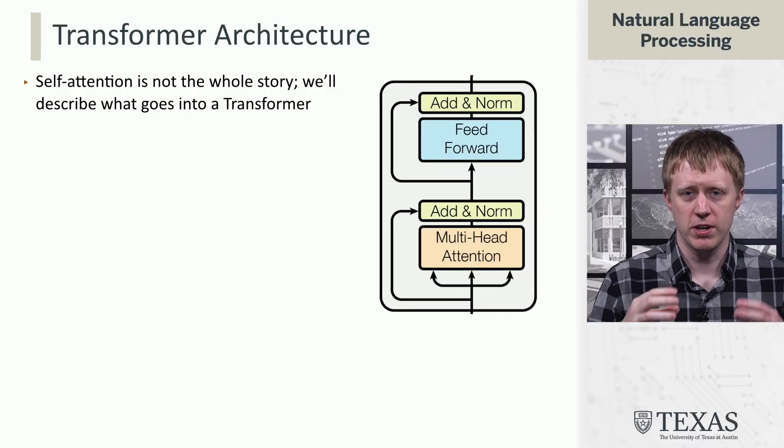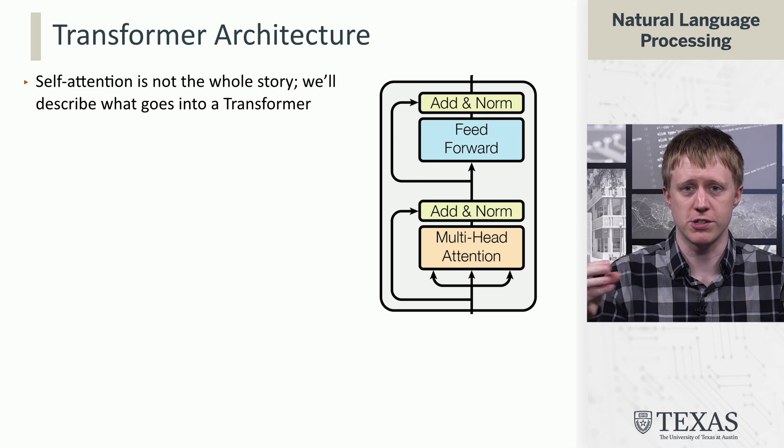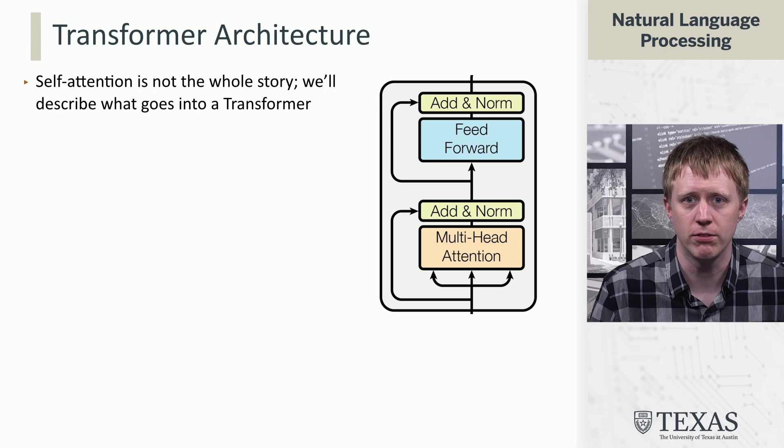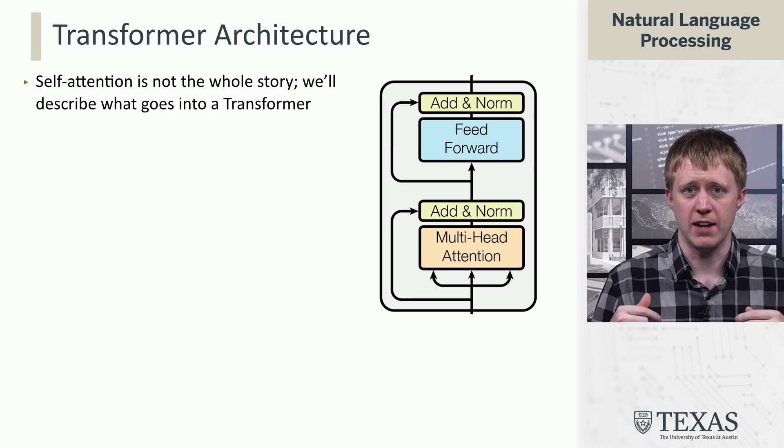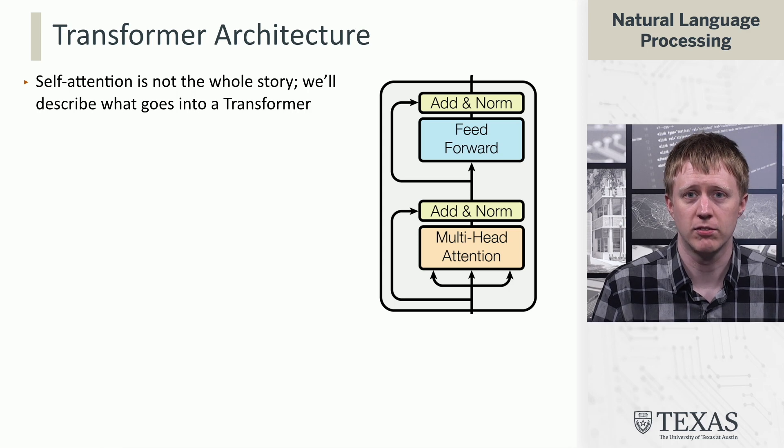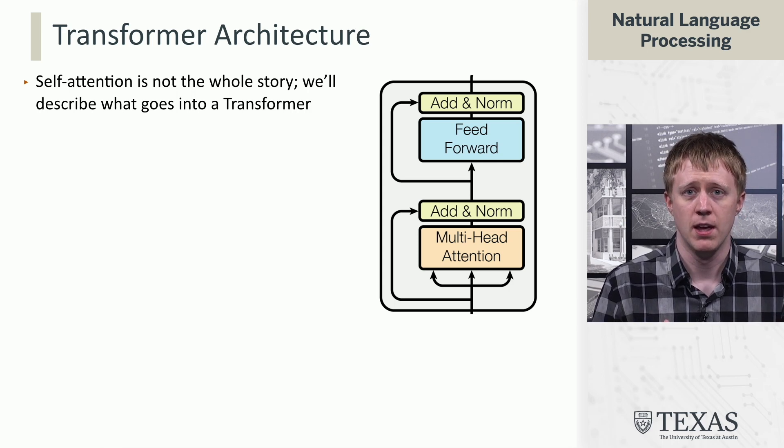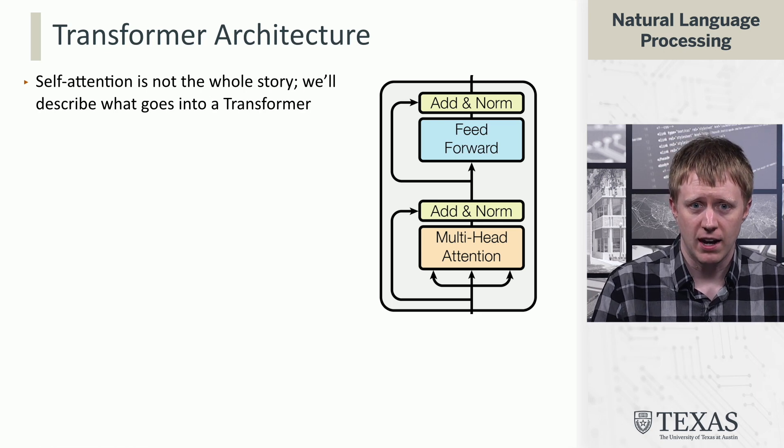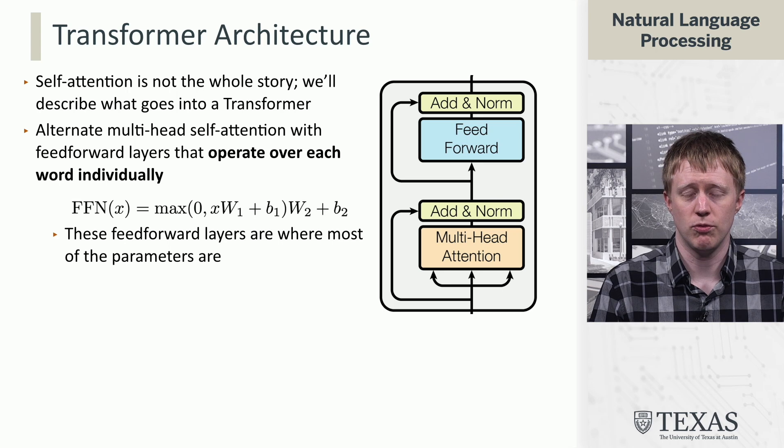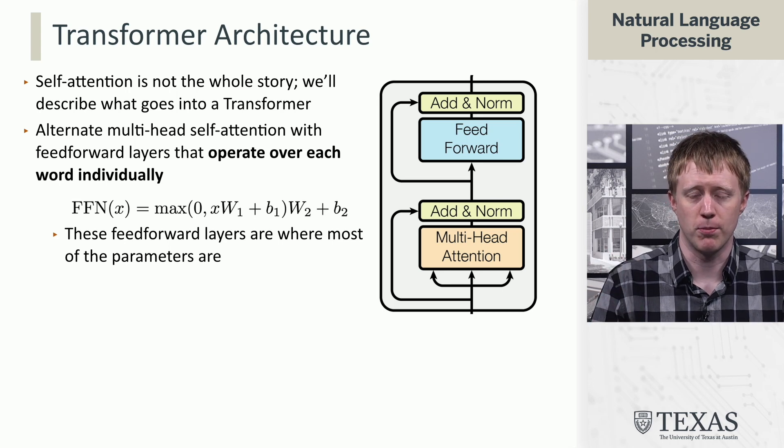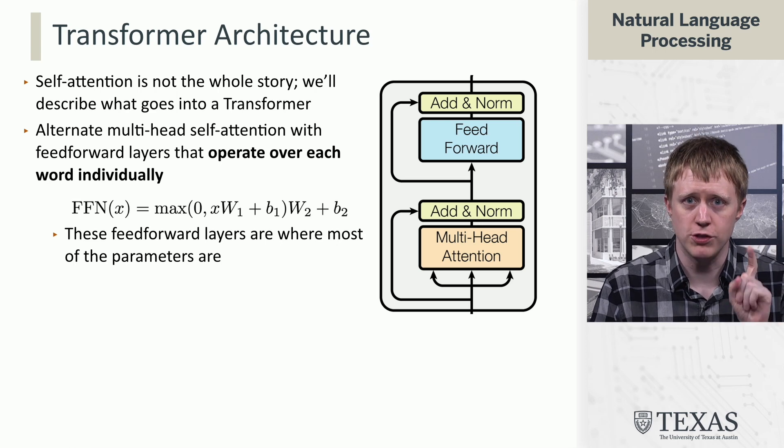In particular, we start off by taking our input sequence, a bunch of embeddings laid out in a sequence, and feeding them into the multi-head attention layer that we've been building up over the past several segments. After that, the main other piece that functions to make transformers do what they do is a feed-forward layer that operates over each word individually.